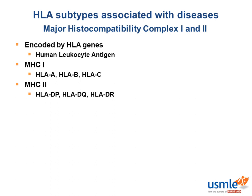HLA-A3 is associated with hemochromatosis. The mnemonic is to spell it like the British spell heme — H-A-E-M — with the 3 standing in for the E, just like in Haemophilus. Hemochromatosis is an autosomal recessive disease, most commonly caused by a C282Y mutation on the HFE gene on chromosome 6.